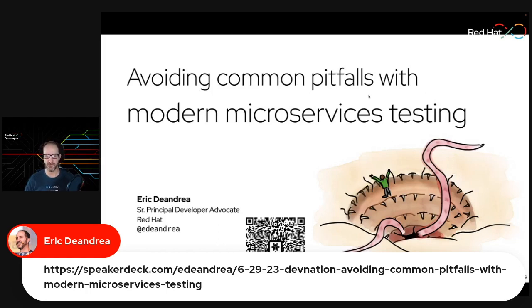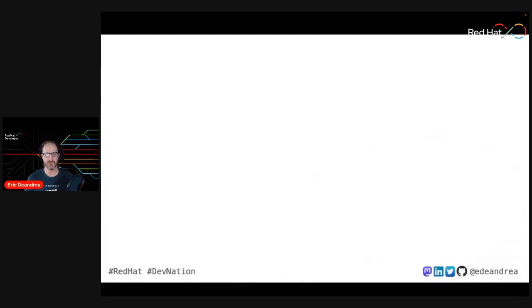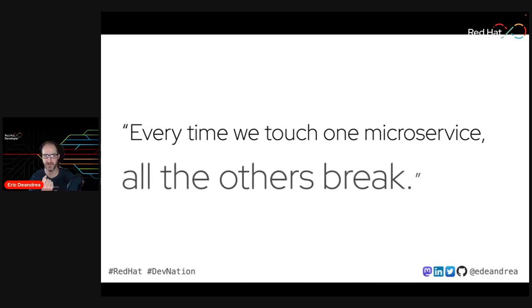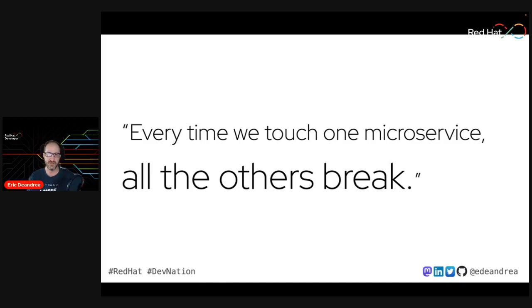Before I joined Red Hat, I worked mostly in financial services and insurance. Back around 2015 we started down the microservices road, and quickly found out that anytime we touched one service, many — or all, dare I say — the others broke. When I read the microservices manual, that wasn't supposed to happen. Microservices are supposed to give you deployment velocity and keep things independent — supposed to fix all your problems, not cause them.